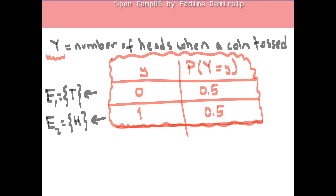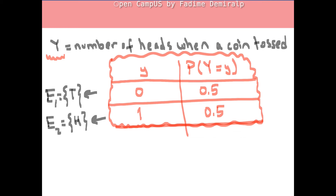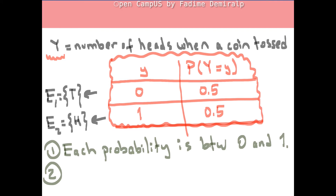We have each probability between 0 and 1, and the sum of the outcome probabilities is 1. Here are the two important properties of a probability distribution: each probability must be between 0 and 1, and the sum of the outcome probabilities is 1.